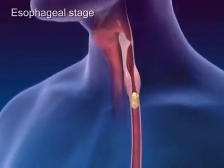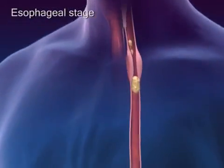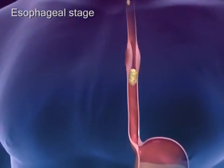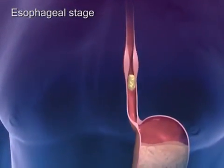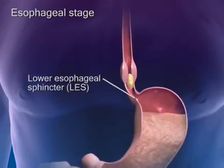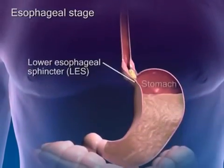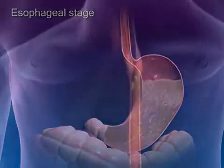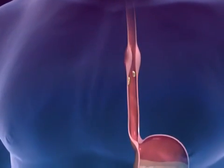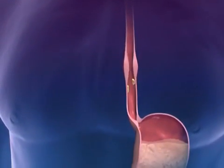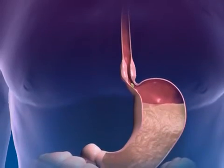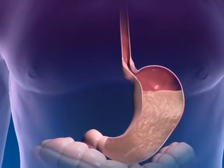During the esophageal stage, a primary wave of peristalsis initiated by the swallowing center pushes the bolus through the esophagus. As the bolus travels through the esophagus, the lower esophageal sphincter relaxes, allowing the food to enter the stomach. If the bolus is sticky and adheres to the esophagus, secondary peristaltic waves triggered by the intrinsic plexus at the point of distension completely clear the esophageal lumen to finish the swallow.